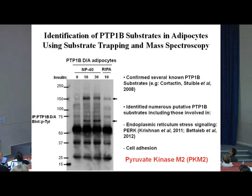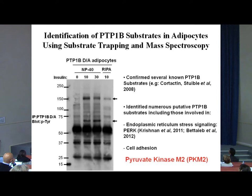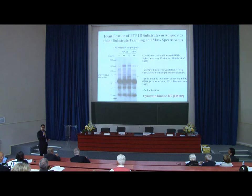We found a number of different potential substrate families. A new subset of targets showed that PTP1B regulates proteins involved in the endoplasmic reticulum stress pathway and the unfolded protein response. We also found targets involved in cell adhesion. One target that caught my attention, which was very high on the list, was pyruvate kinase M2, PKM2, which I knew was being targeted for glucose metabolism, but I was not clear if it was expressed in fat.